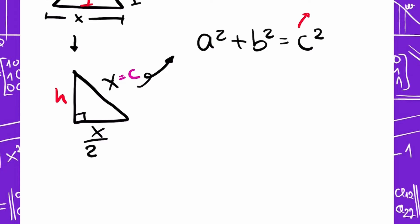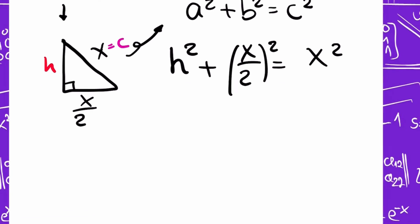First, we have A squared. A is H, H squared, plus B squared, which is X divided 2 squared, equals C squared. And C is X, X squared. C is the hypotenuse. We need to remember this.